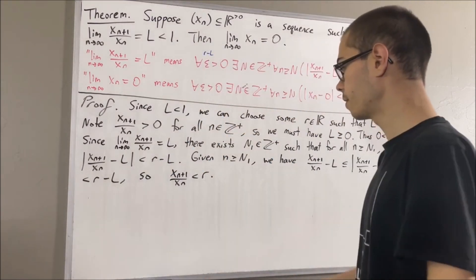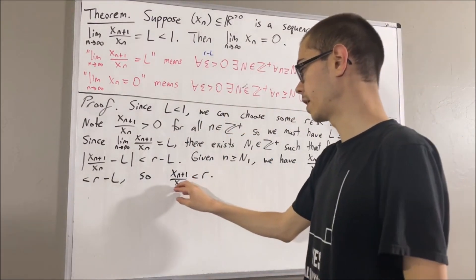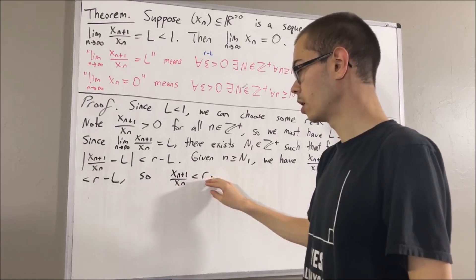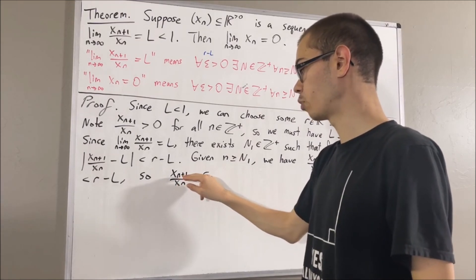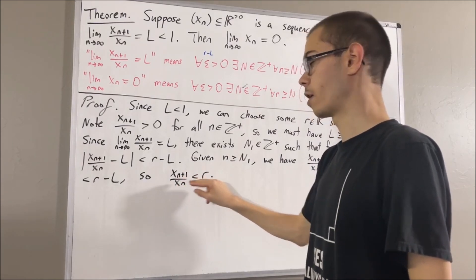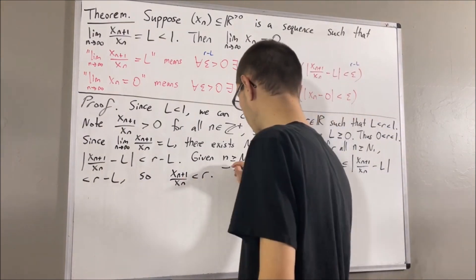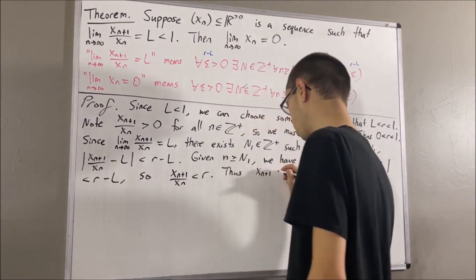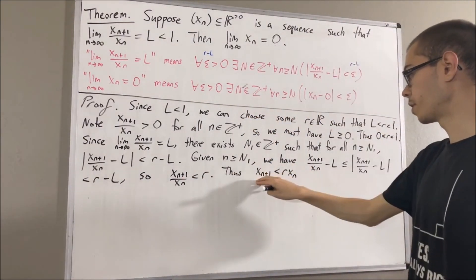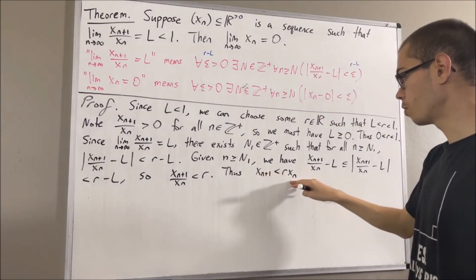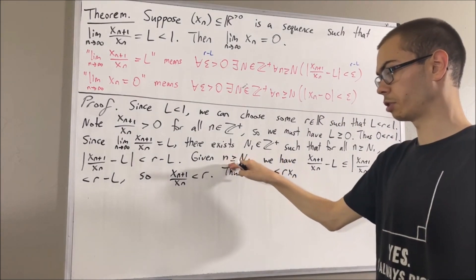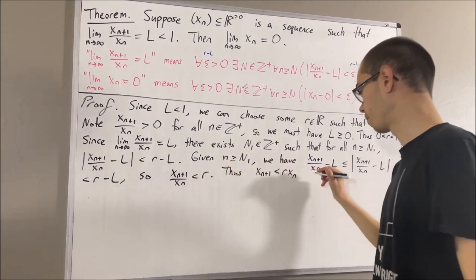Then, multiplying both sides by x_n, we get x_{n+1} < r·x_n. So we have shown that this inequality is true for any positive integer n greater than or equal to N1.